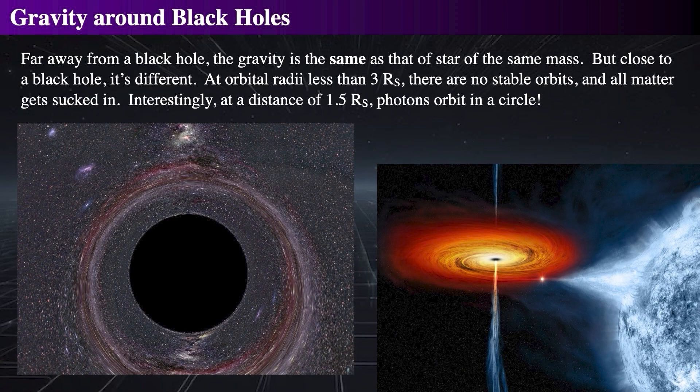The gravity right around black holes is incredibly intense, but there's an important detail that many people don't quite get. Let's consider a black hole with one solar mass. When you're close to its event horizon, which is about 3 kilometers in radius, things become really strange.